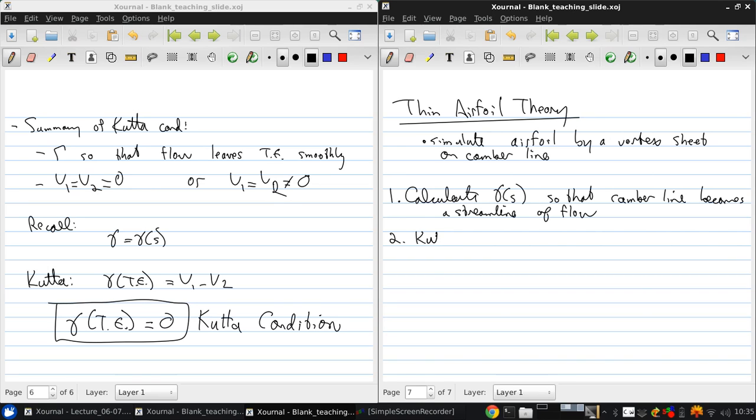Then apply the Kutta condition, which means that the sheet strength at the trailing edge must be zero. Then we can calculate the total circulation, the integral from the leading edge to the trailing edge of gamma of s ds.